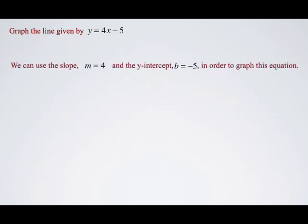We can use the slope, m equals 4, and the y-intercept, b equals negative 5, in order to graph this equation.